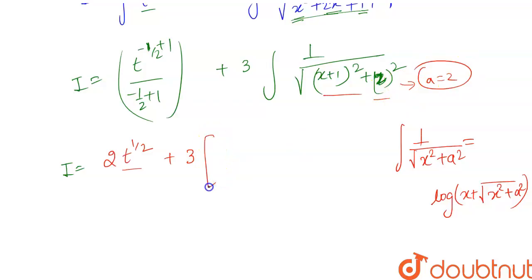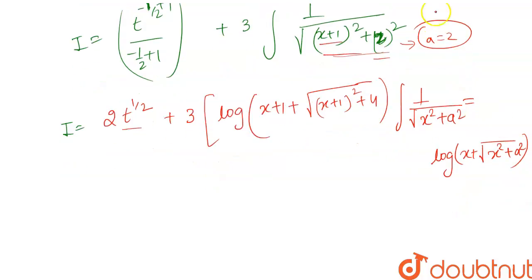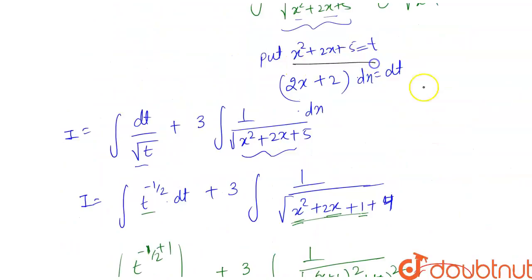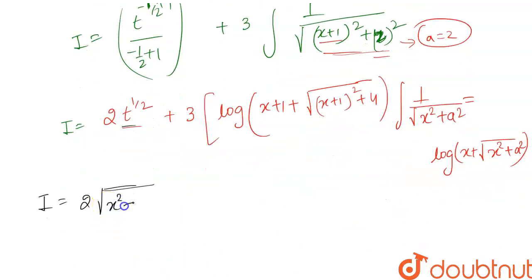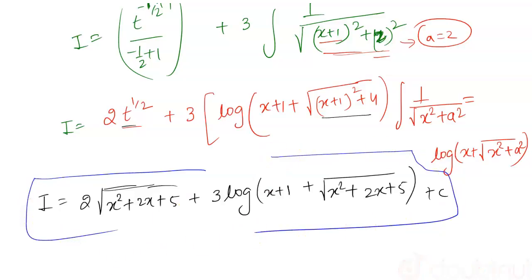Comparing with our expression, the value of a is 2. So the second integral becomes: log|(x + 1) + √((x + 1)² + 4)|. Finally, substituting back t = x² + 2x + 5, the complete answer is: I = 2√(x² + 2x + 5) + 3·log|(x + 1) + √(x² + 2x + 5)| + C, where C is the integrating constant.